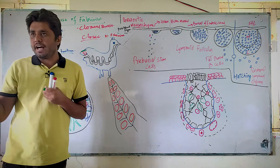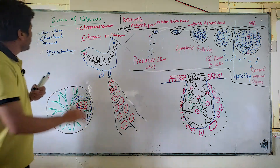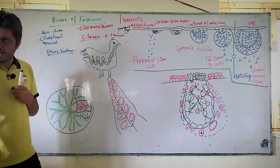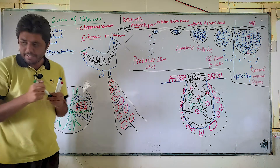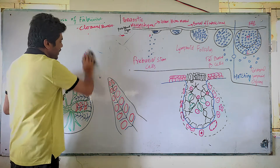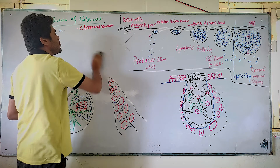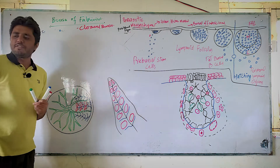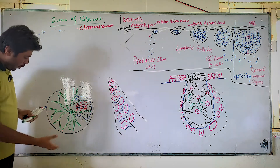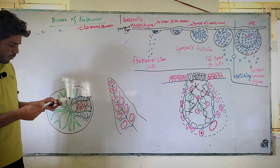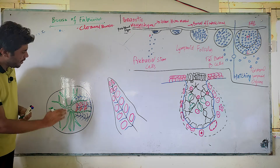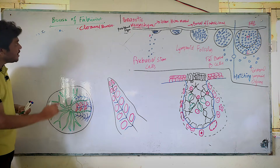Simply, if somebody asks where the Bursa of Fabricius is, you can say it is on the dorsal side of the cloaca. The size of the bursa is equal to a chestnut — it is small and spherical. Now, after understanding the gross anatomy, we look into the histological structure of the Bursa of Fabricius, using a cross-section diagram of the cloacal bursa.